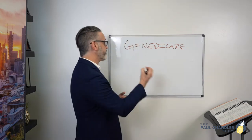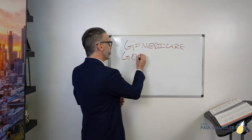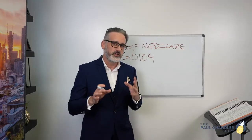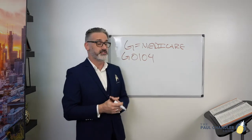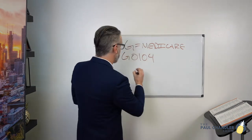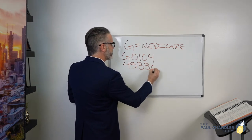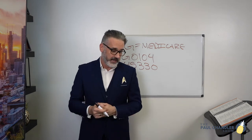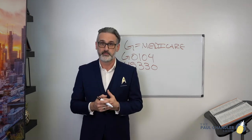Medicare also has a lot of G-codes dealing with colonoscopies. For example, we have G0104. Looking at the description of G0104: colorectal cancer screening, flexible sigmoidoscopy. And then if we compare it to the CPT book, at code 45330: sigmoidoscopy, flexible, diagnostic, including collection of specimens by brushing or washing when performed.